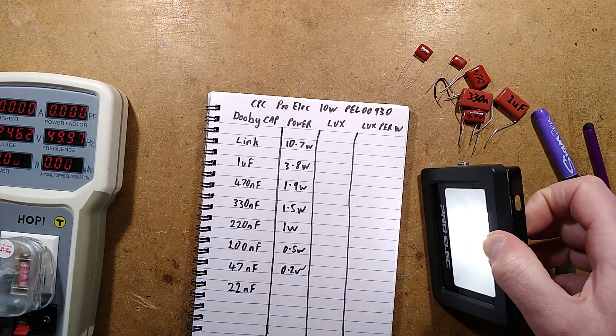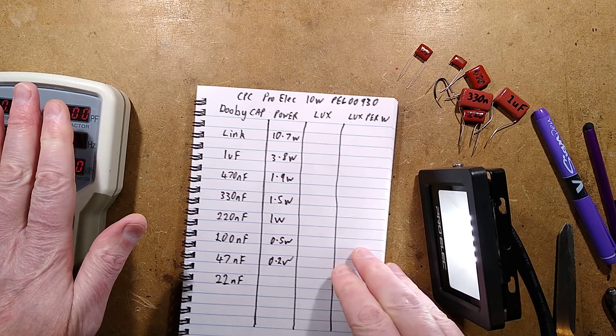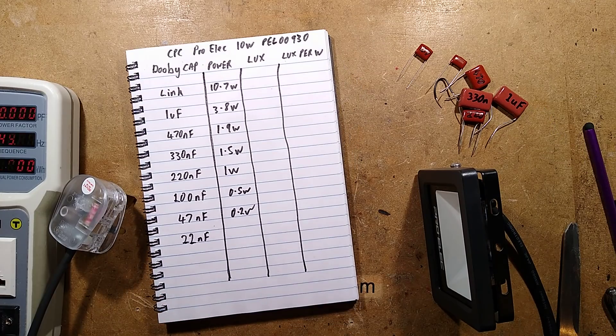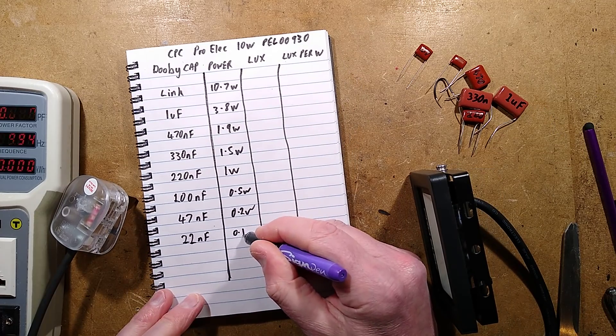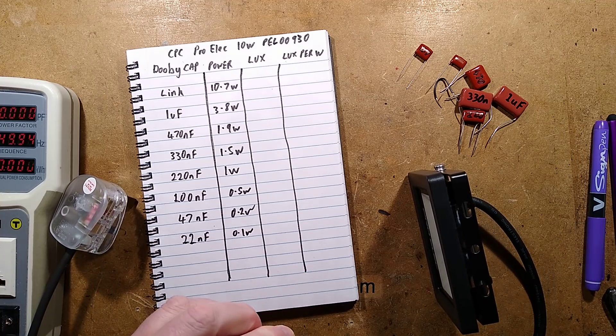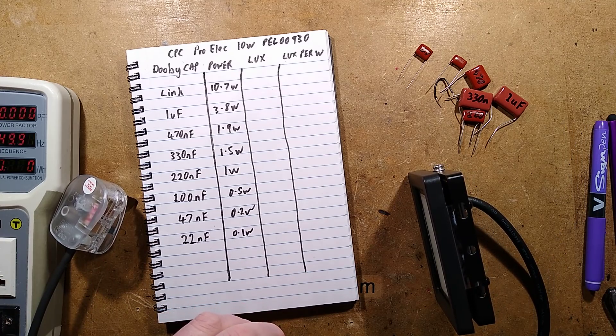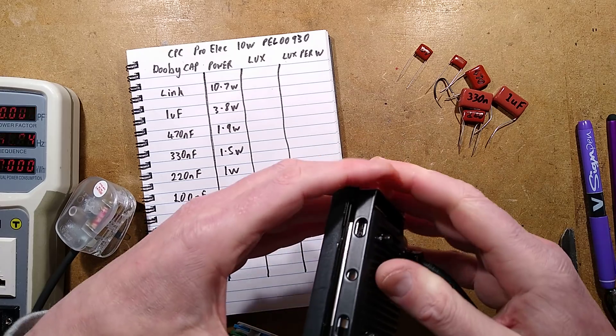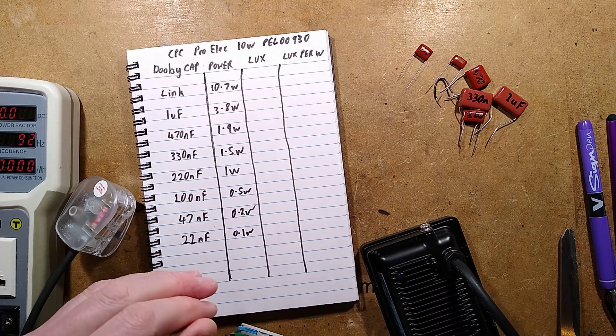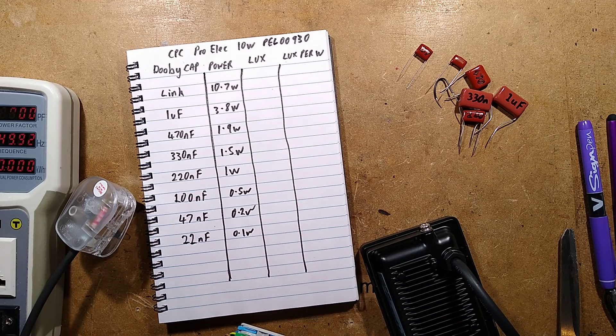So, 100 nanofarad going to the sort of half watt might be too low. Tell you what then. I'm going to do the lux tests now. I shall write that in as 0.1 watt. And I'll try these capacitors again, but this time, I'm going to clamp this light above the bench. I don't think it's going to be very photogenic. It's going to be time-consuming. I'll just fill it in and I'll be back in a moment. One moment, please.